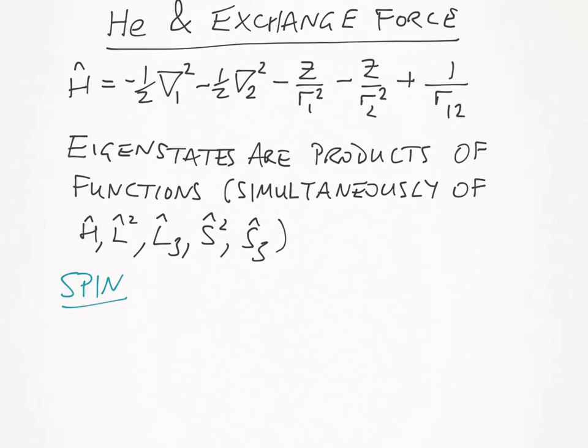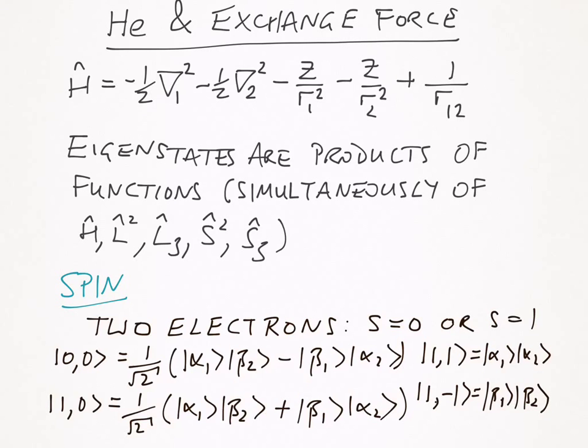When we think about spin, of course, we have to take on the fact that we have a two-electron system, and so the spin is going to have to take into account the coupling between the two spins. With two electrons, both of spin a half, we can have the total spin S equals naught or S equals 1.